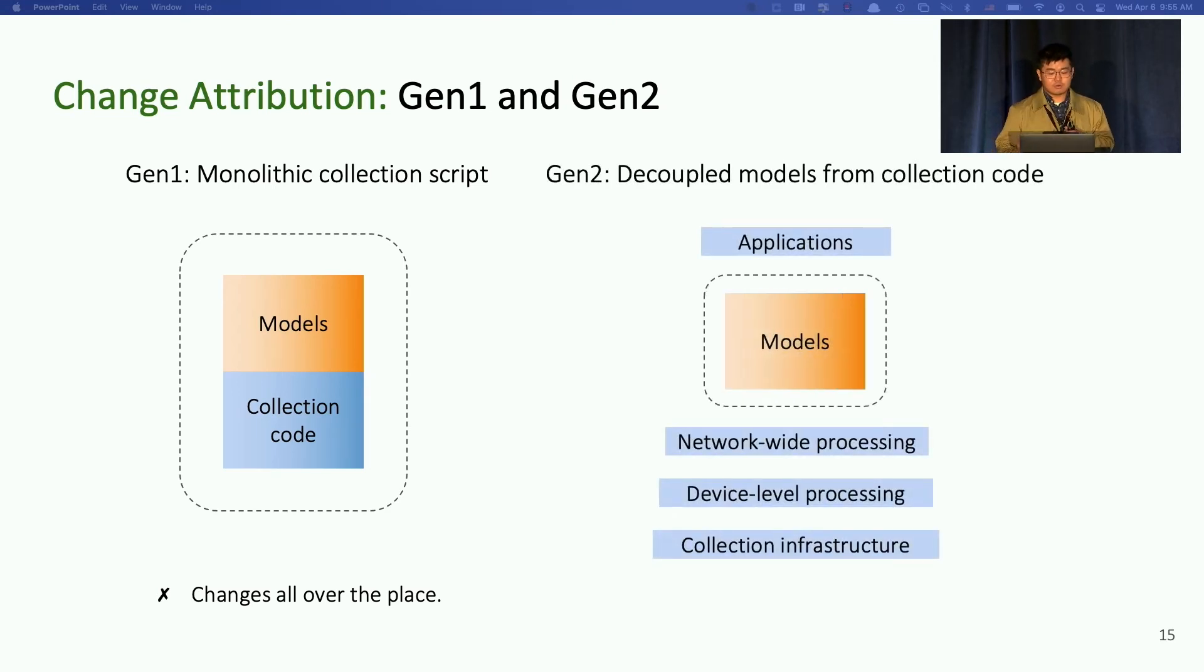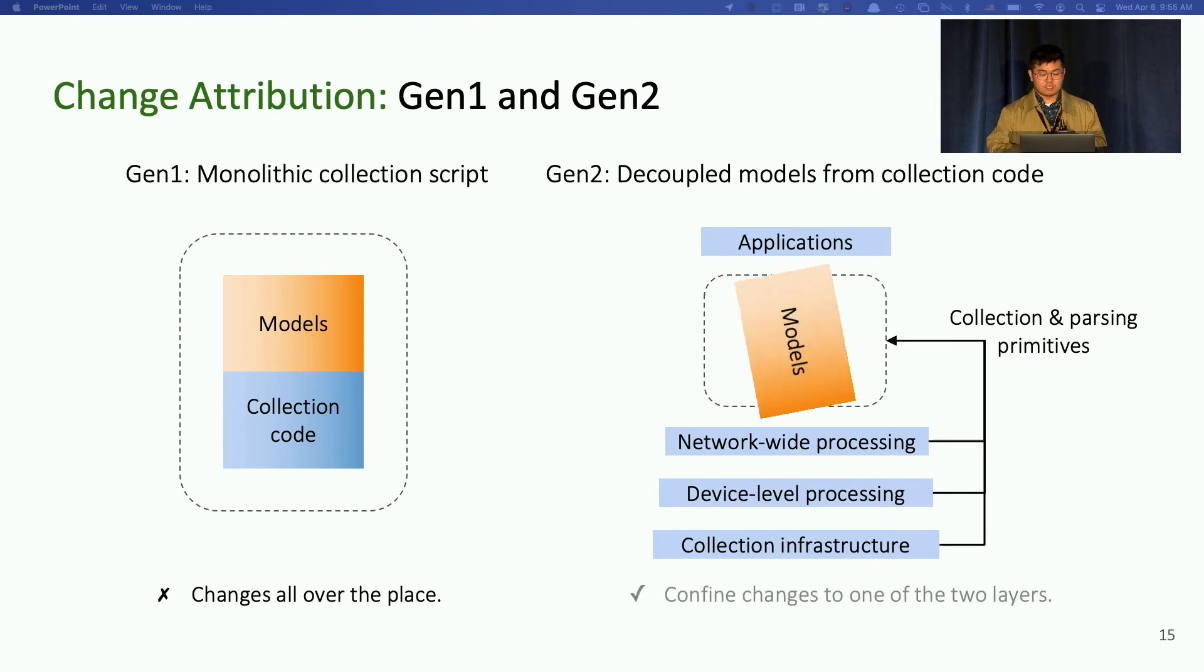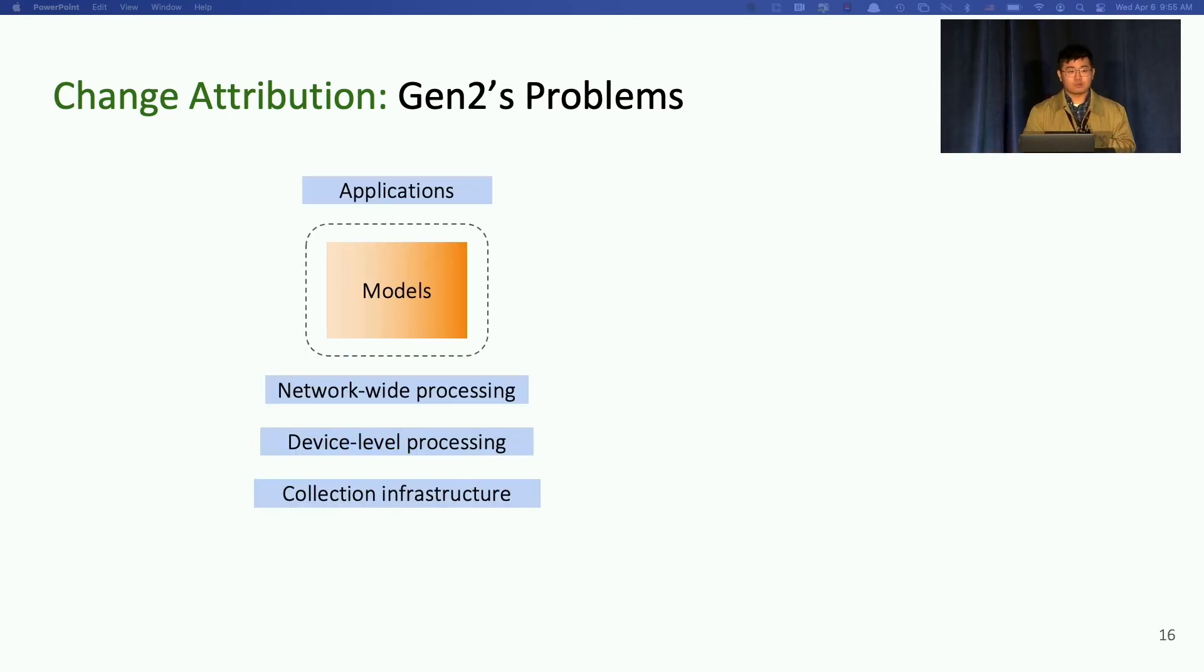So in the second generation of telemetry system, we try to decouple the models from collection codes. The collection code now evolves into a separate generic and layered runtime in the blue box. It provides common collection and parsing primitives to the models or model developers. In this way, we can change the models without changing the runtime or involving them separately. Furthermore, we can easily track and attribute changes to different layers in the model or the runtime to identify whether the changes caused by, say, adding new counters to the models or new processing method to the runtime.